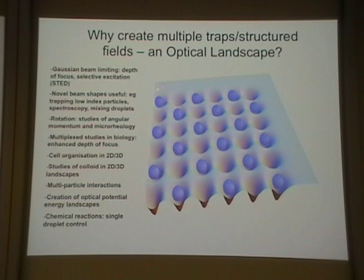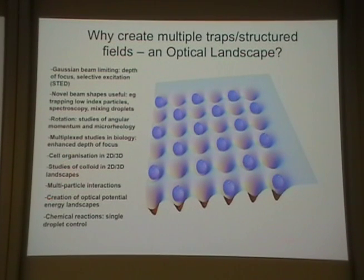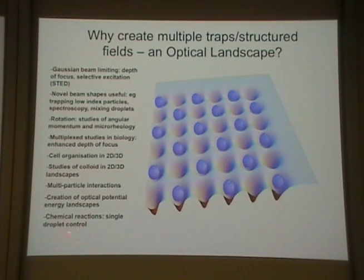We can look at rotation, cell organisation in 2D and 3D, and competition between electrostatic effects, chemical effects, and the optical field. One of the beautiful things in both colloidal and cell biology is templates for nucleation — creating small nuclei and seeing how tissue or other particles grow around them. Can you create templates to grow photonic crystals? We can look at interactions between particles. All of these come under a generally accepted phrase: potential energy landscape. Other things emerging now include single-droplet reactions and creating arrays of particles.